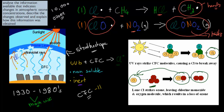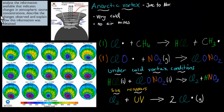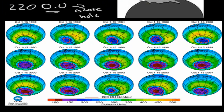What we have to talk about in this video is: analyze information available that indicates changes in atmospheric ozone concentrations, describe the changes observed, and explain how this information was obtained. In terms of evidence, we have diagrams that show the density of ozone. If we have a density of less than 220 DU — we'll cover what DU means — that's considered to be an ozone hole. You can see it always says October in the year-by-year sequence, and there's a reason for that which I'll go over.